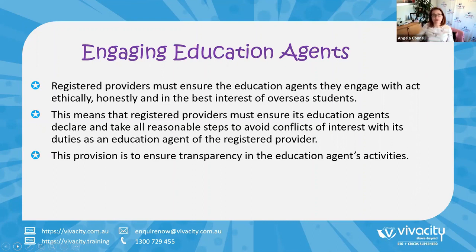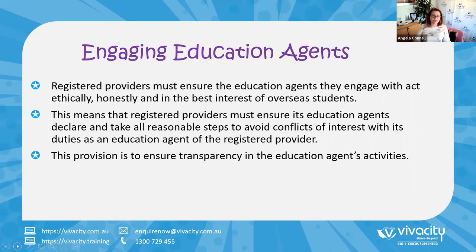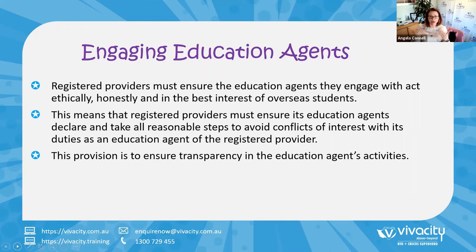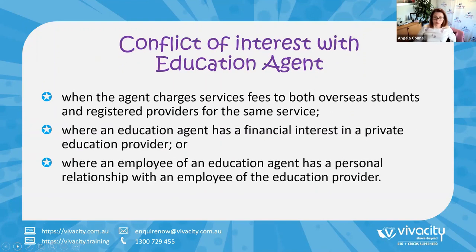Under standard 4.1 of the national code, the registered provider must enter into a written agreement. The key difference with education agents versus other third parties is that they need to be entered on PRISMS and you must maintain a list of all education agents that is publicly available on your website. We need to address the ESOS Act and the National Code 2018 and all legal requirements for education agents — we've addressed that in our education agent third party agreement.